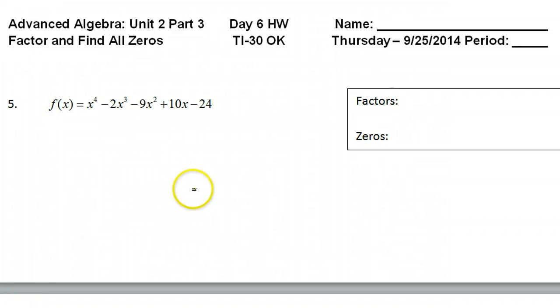All right guys, this is part three of our lesson on factoring polynomials and finding all of those zeros. We're even going to deal with fourth degree, which can sometimes be trickier.